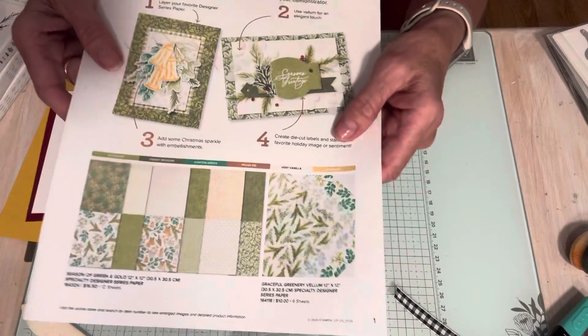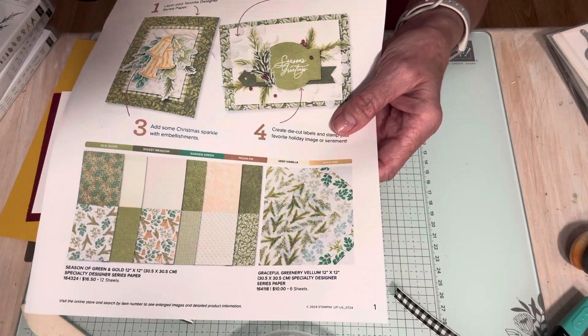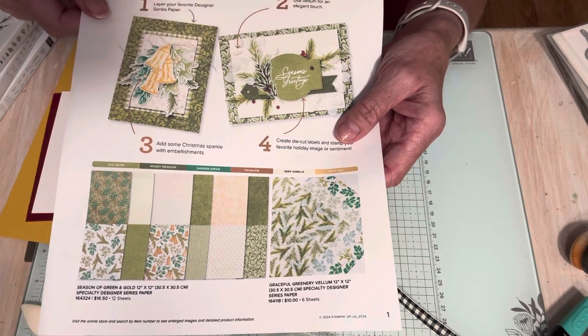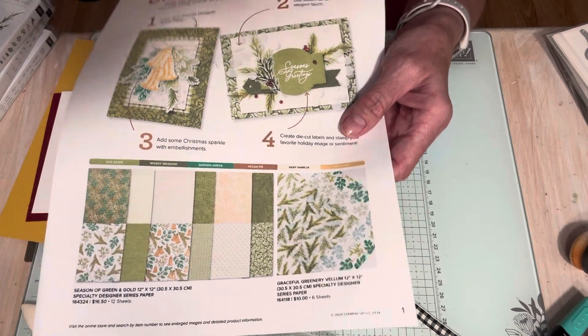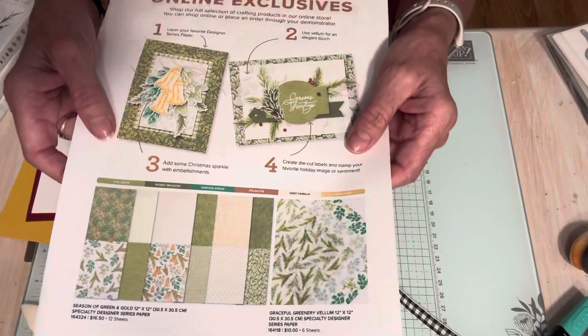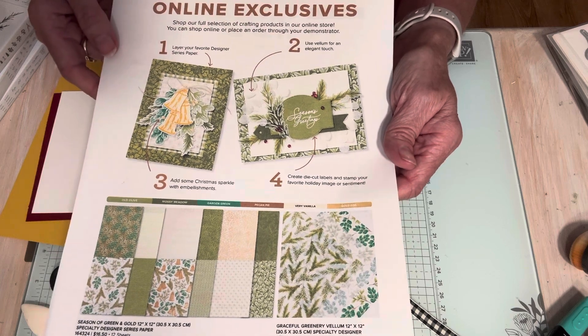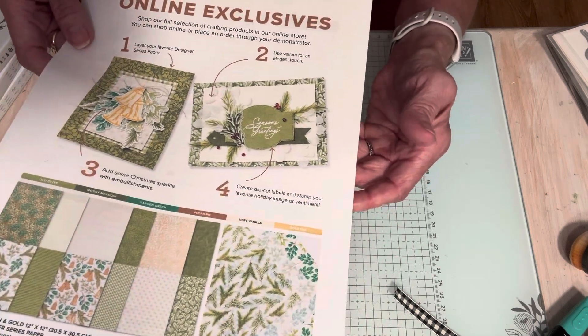So the paper, there's also paper. So we have designer series paper and vellum. So that is included in the suite collection. So you actually get eight items in this collection. And I'm going to be making some very cool Christmas cards with this. So let's get started.